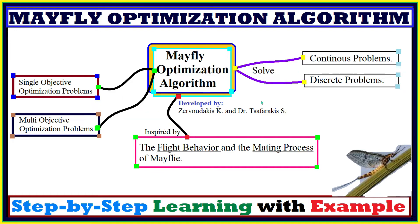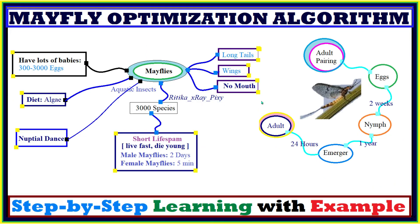Since this algorithm is inspired by the flight behavior and mating behavior of Mayflies, we will first try to understand Mayfly behavior in real life so that we can easily understand how this algorithm works. Mayflies are aquatic insects, also known as fish flies and upwing flies in the United Kingdom. Over 3,000 species of Mayflies are estimated worldwide, and they appear mainly during the month of May in the UK.